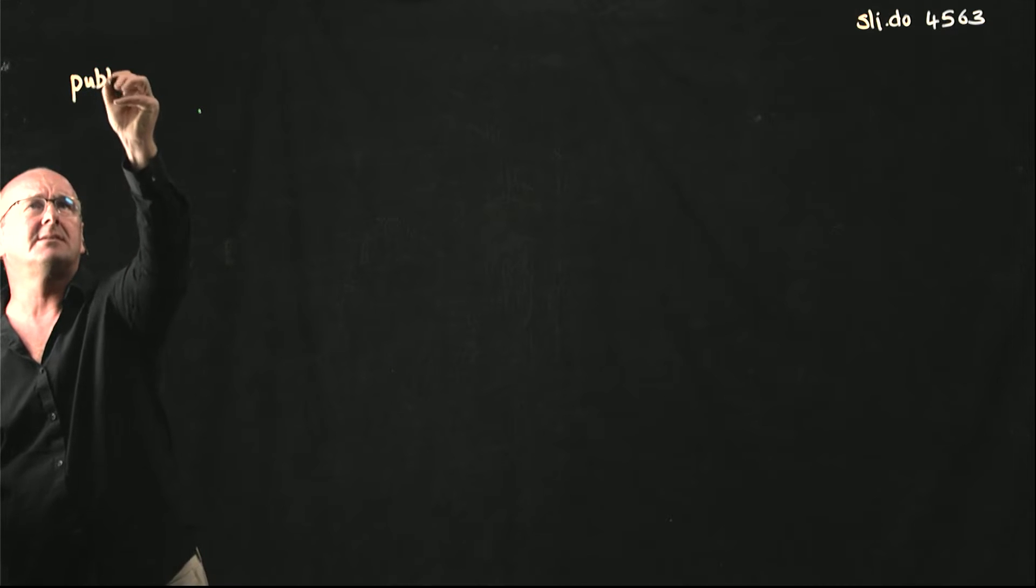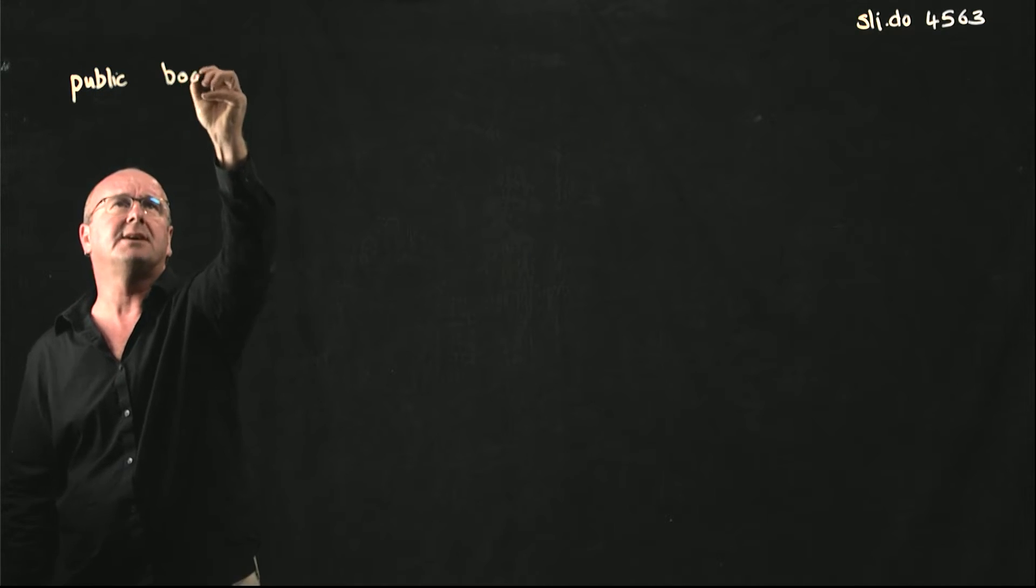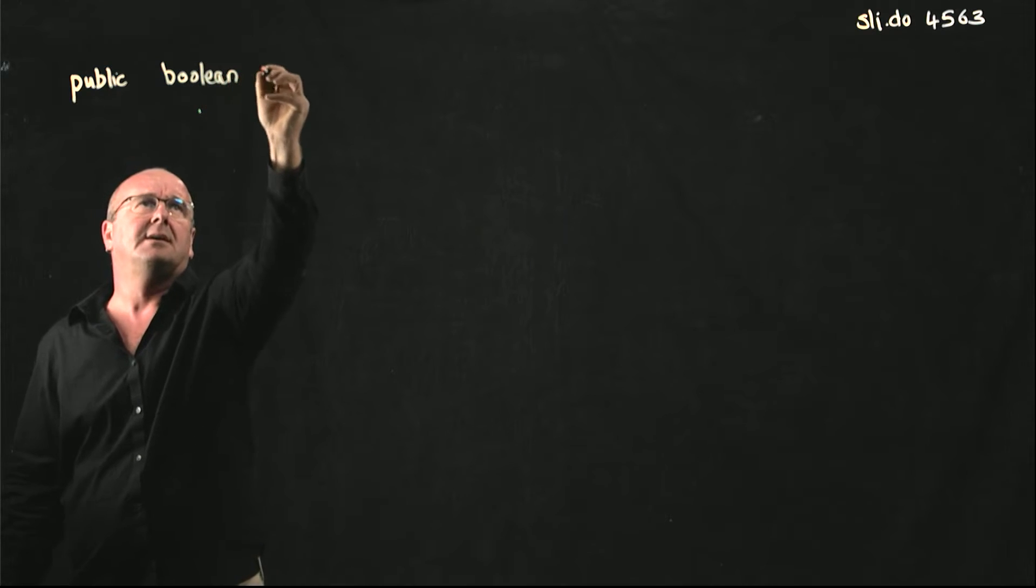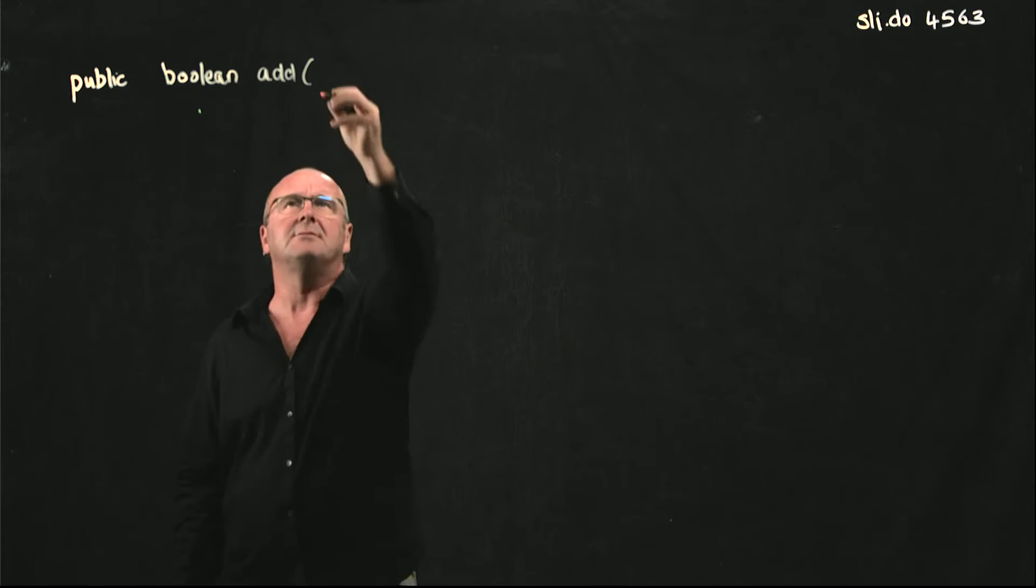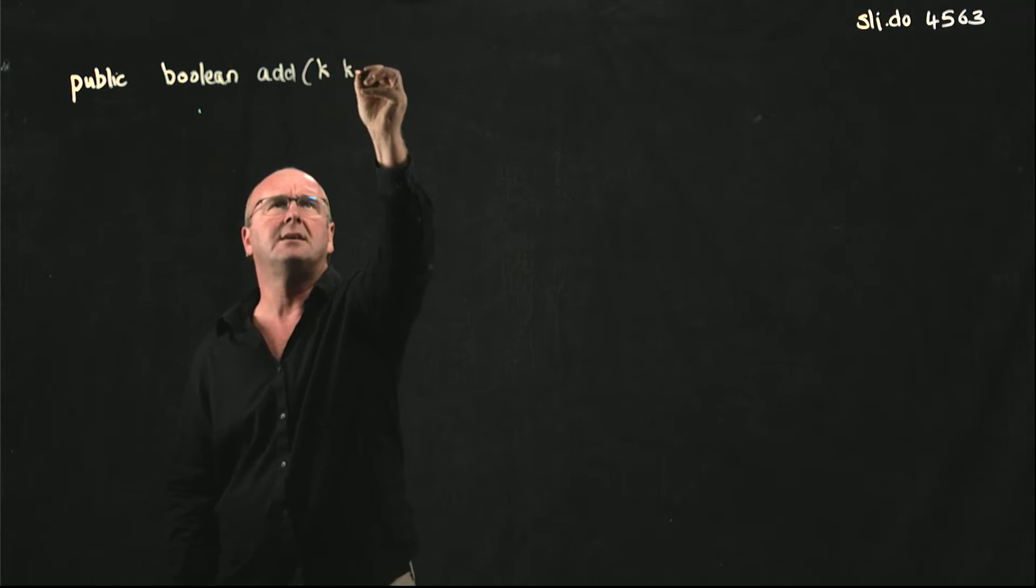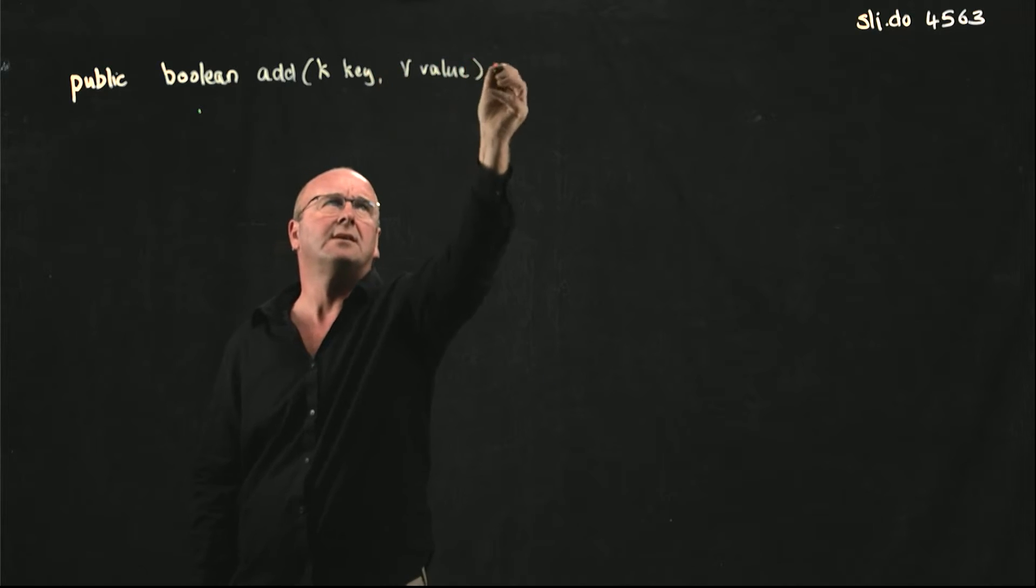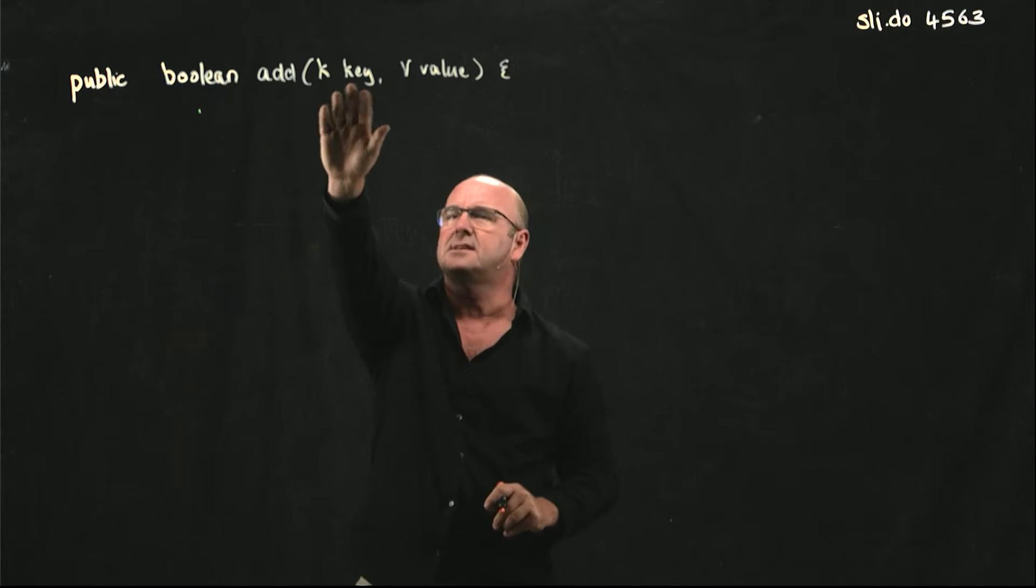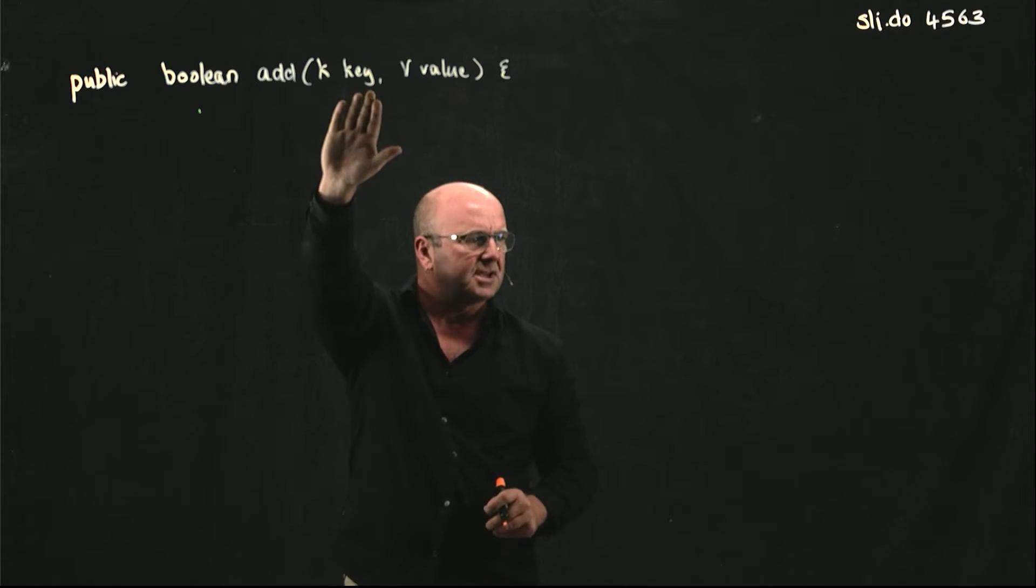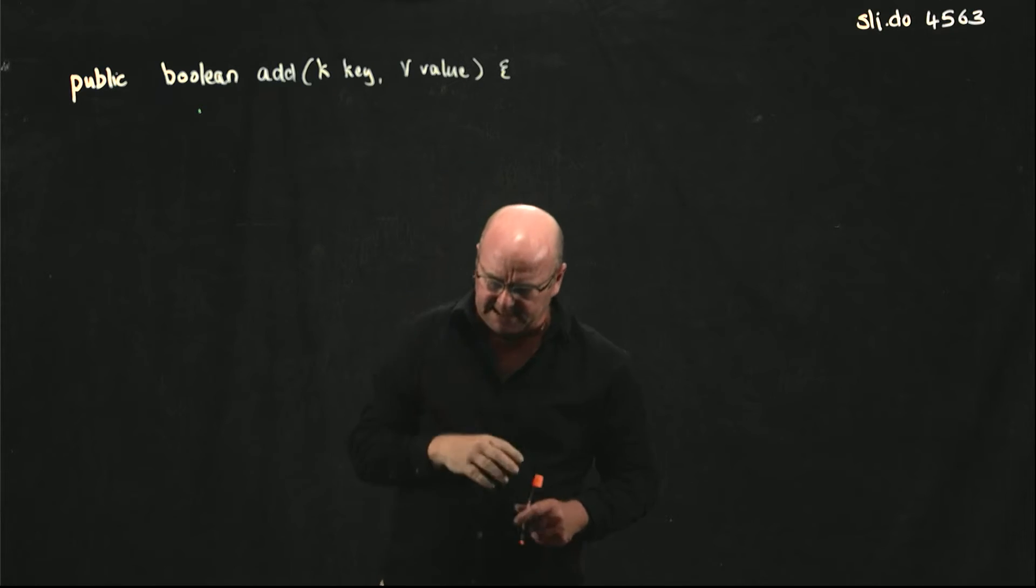So let's take a look, for example, at our public. Let's make it a Boolean add. And add is going to take two arguments, it's going to take a key and a value. And just like we've seen before with generics, instead of saying int key or string key or integer key or double or whatever, we use k for key and v for value.